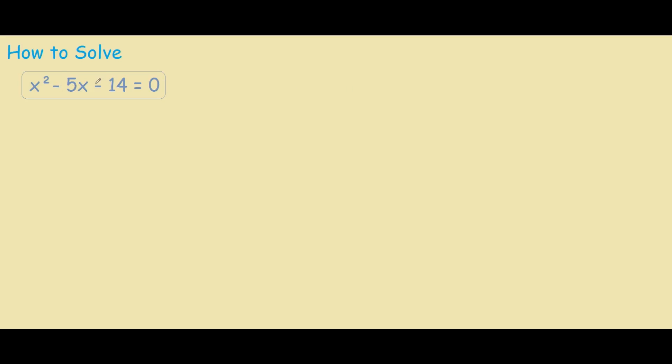To solve x squared minus 5x minus 14 equals 0, we must find out if this equation can be first factored.